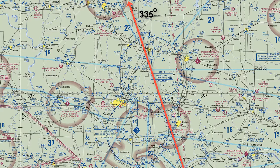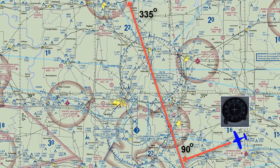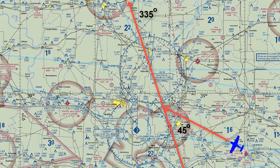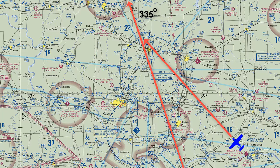Now I could fly directly to the course by flying at a 90 degree angle to the course to get there the fastest, or at a heading of 245 degrees. But instead of doing that I'm going to intercept the course at 45 degrees, or a heading of 290 degrees. Whatever angle you decide to intercept a course is up to you, but make sure the angle is not too large or you'll end up passing the VOR and your flag will indicate FROM at that point.